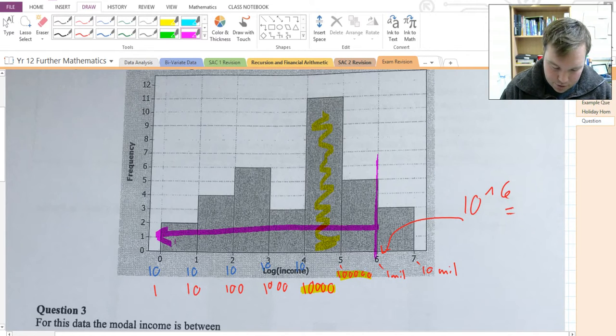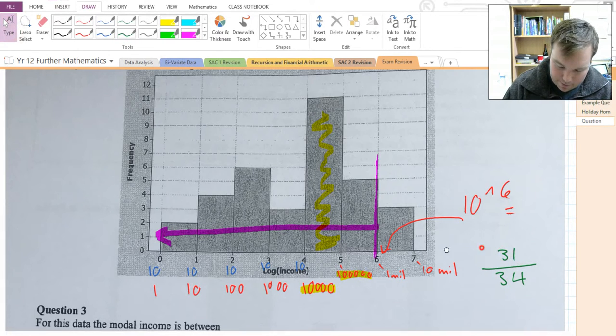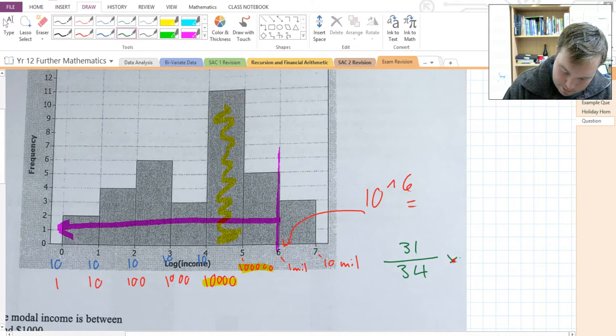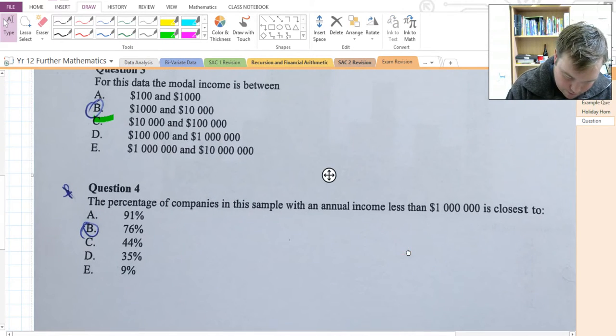So, in total, there are 34 companies, and the number of them with annual incomes of less than a million is 31. So, you would do 31 divided by 34 times 100 to get a percentage, and it works out to about 91%, giving you an answer of A.